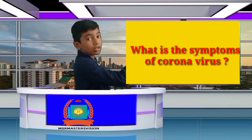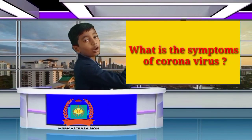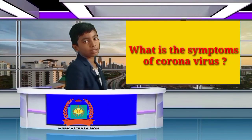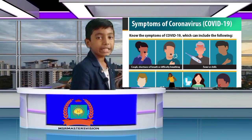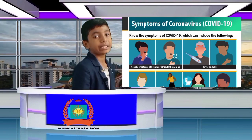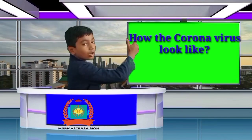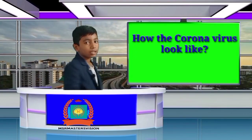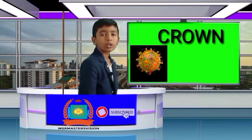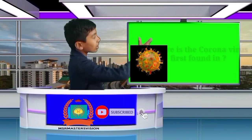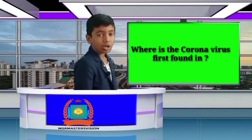What are the symptoms of Corona virus? Fever, cough, difficulty in breathing. How does Corona virus look like? Answer is Crown. Where was the Corona virus first found? Answer is Wuhan city of China.